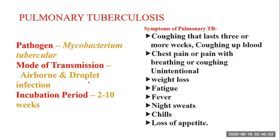Another disease is pulmonary tuberculosis. Its pathogen is Mycobacterium tuberculosis, and the mode of transmission is airborne and droplet infection. By both ways it can affect the human body. Incubation period is 3 to 10 weeks. Symptoms include coughing that lasts three or more weeks, sometimes with blood, chest pain or pain with breathing or coughing, unintentional weight loss, fatigue, fever, night sweats, chills, and loss of appetite.